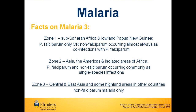The World Health Organisation has categorised areas of relative prevalence of the different malaria species according to zones. Zone 1 includes Sub-Saharan Africa and lowland Papua New Guinea, and the species predominantly found here are Plasmodium falciparum only, or other non-falciparum occurring always as co-infections with falciparum. Zone 2 includes Asia, the Americas, and isolated areas of Africa, where any of the four species can occur, but most commonly as single species infections. Zone 3 includes Central and East Asia and some highland areas in other countries, and these areas only experience non-falciparum malaria infections.